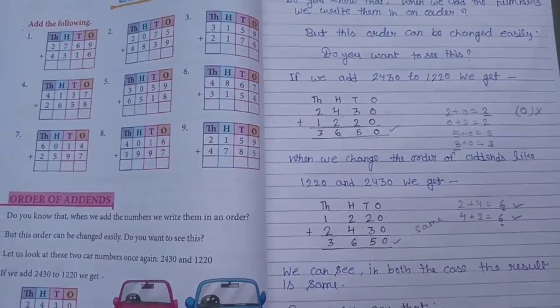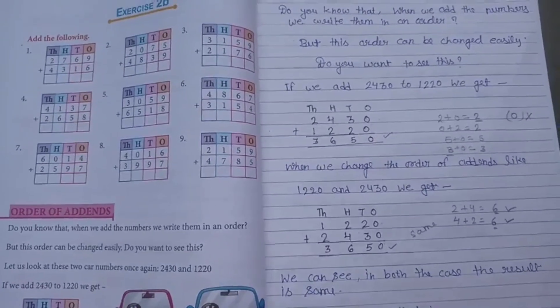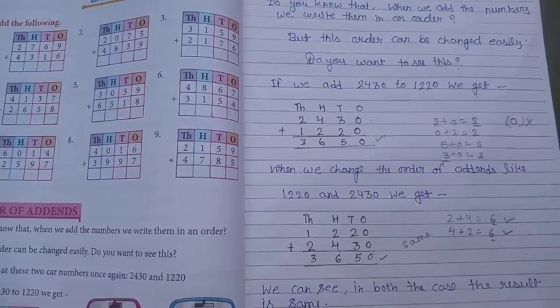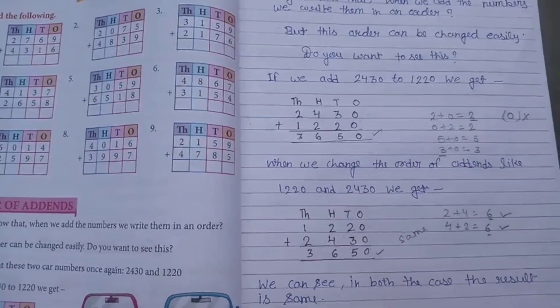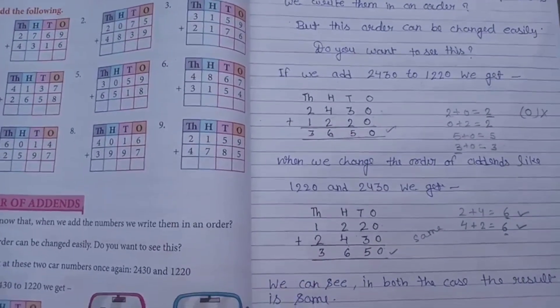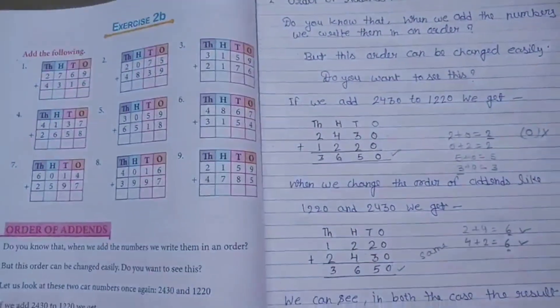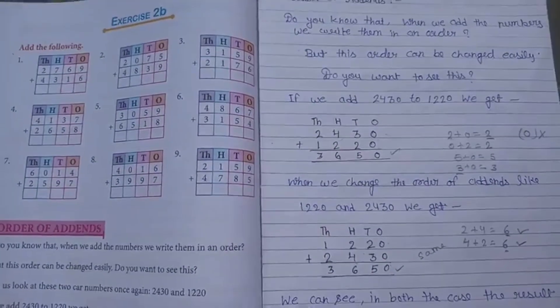When we change the order of addends like 1220 and 2430, we get the same result. 2 plus 0 is equal to 2, 0 plus 2 is equal to 2.